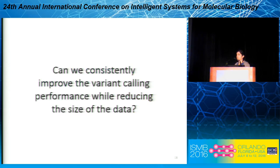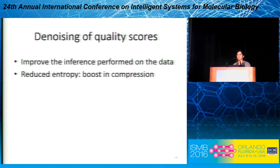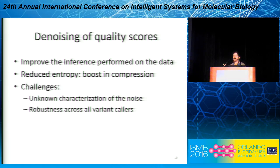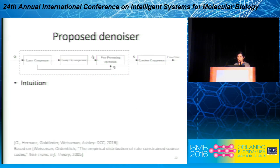This leads to the question: can we consistently improve variant calling performance while still reducing the size of the data? What comes to mind is denoising of the quality scores. The idea is to explicitly reduce the noise in the data so that we can improve the inference, and because there is less noise, the entropy is also reduced, meaning we can still get improvement in compression. Challenges include not knowing the statistics of the noise and wanting the algorithm to be robust against all variant callers used in practice.